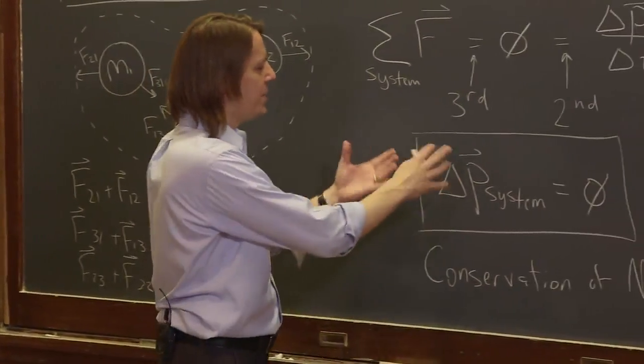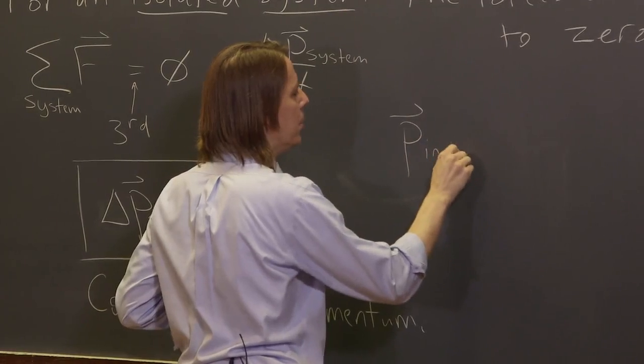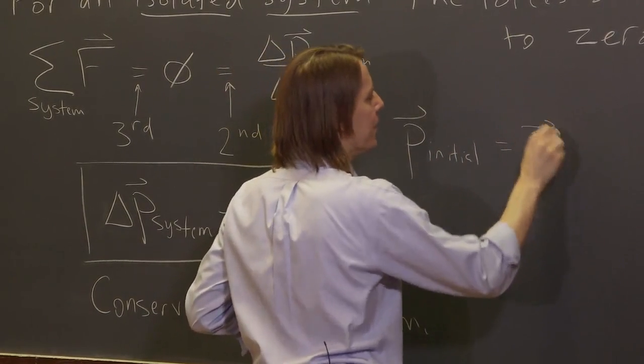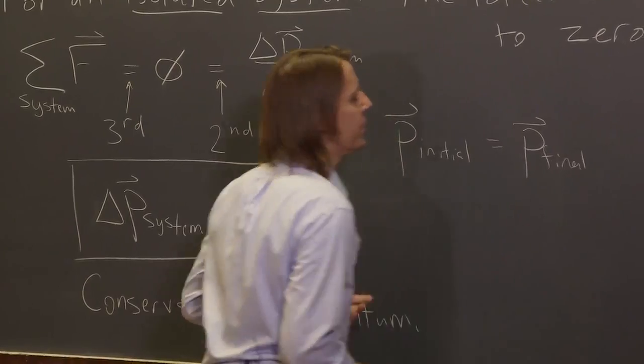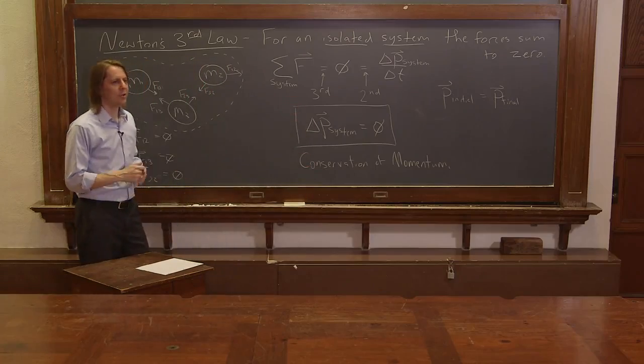So, of course, what this means is if the change of momentum is equal to 0, it means that in any case, the initial momentum has to equal the final momentum when you go through some change, when you go through some state. So this is the equation we're going to be using quite a bit to work on problems.